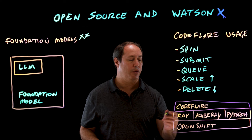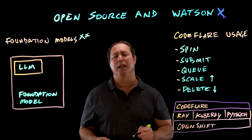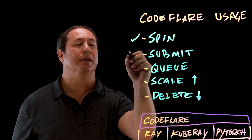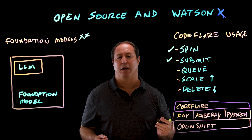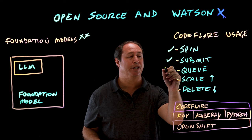With Ray, CodeFlare provides a job abstraction. KubeRay allows Ray to run on Kubernetes platforms like OpenShift, and we'll talk a little bit more about PyTorch in a minute. Let's look at a typical CodeFlare use case. The first thing it's going to allow us to do is spin up a Ray cluster, and it's then going to allow the data scientist to submit training jobs to the cluster.